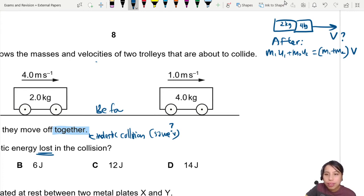So let's fill in the blanks. M1U1, 2 kg times 4 meter per second plus 4 kg times 1 meter per second equals to, what's the total mass? 4 plus 2. Velocity? Don't know. We're trying to find that. So you press the calculator, you should get V equals to 2 meters per second.